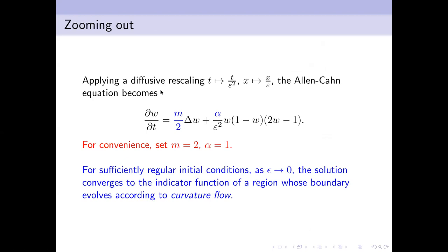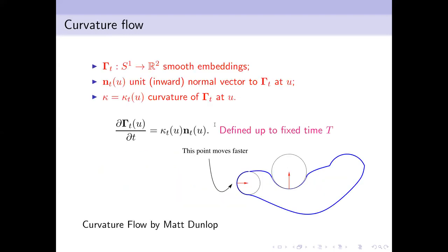It is known that as ε → 0, for sufficiently regular initial conditions, the solution to the scaled Allen-Cahn equation converges to the indicator function of a region whose boundary evolves according to mean curvature flow (which I'll just call curvature flow). Technically, this means having a family of embeddings from the circle into ℝ² and evolving each point at a rate proportional to the curvature in the direction of the inward unit normal.